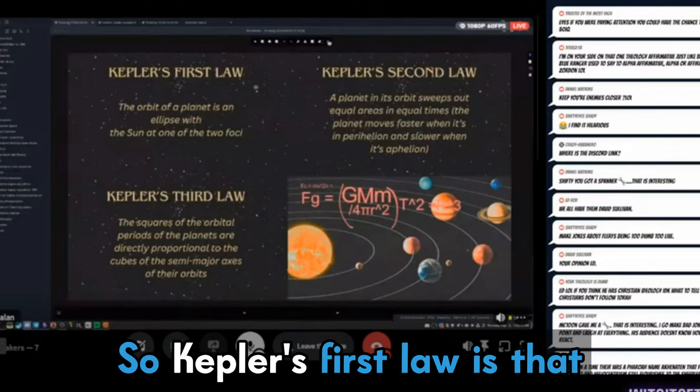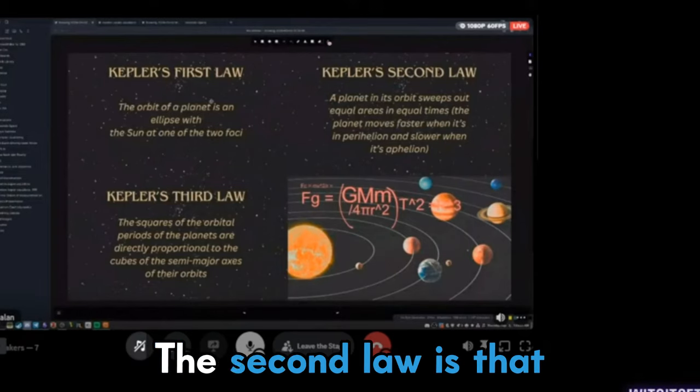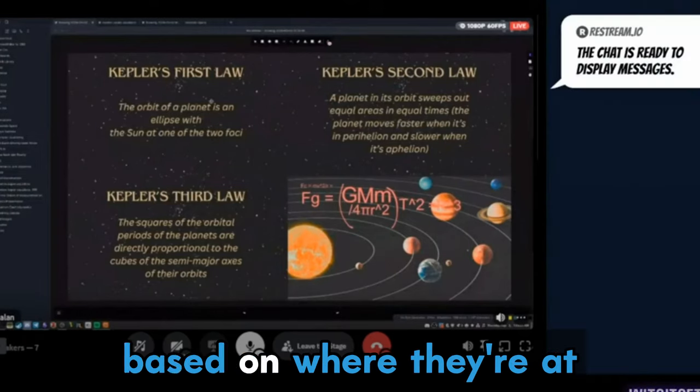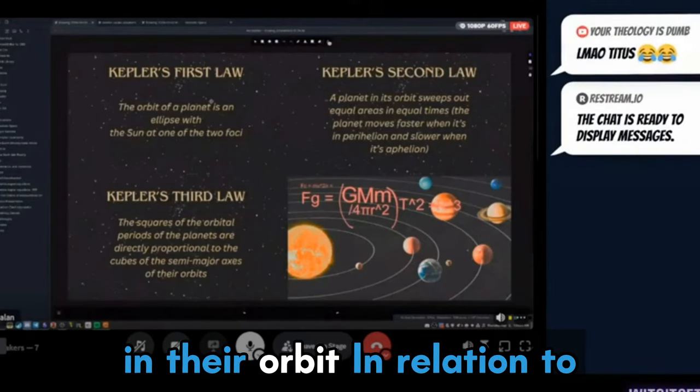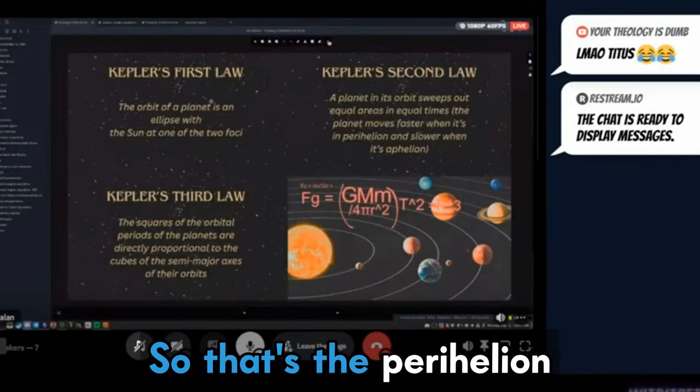Kepler's first law is that all the orbits are ellipses. The second law is that based on where they're at in their orbit in relation to the sun, they'll either be moving faster or slower. So that's the perihelion and aphelion.